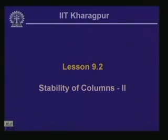Welcome to the second lesson of the 9th module on stability of columns, Part 2. In the last lesson we introduced the concept of buckling in a column member subjected to compressive force, looked into stability aspects of different types of column members, and introduced the derivations proposed by Leonard Euler, which we normally call Euler's Buckling Load Formula.